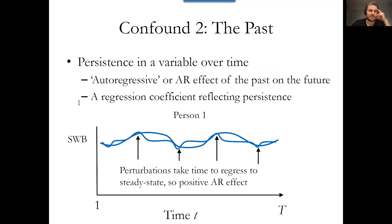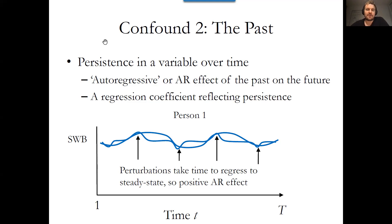Another thing we typically want to control for is the past along a given variable — we want to ensure that the history associated with a given individual doesn't confound the causal inferences we might make when looking at two variables evolving over time that may have effects on each other. So we include an autoregressive or AR term to control for the past, essentially erasing heterogeneity across people that exists in the past, removing it as a potential explanation for future relationships.